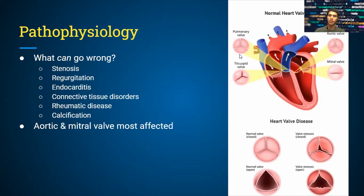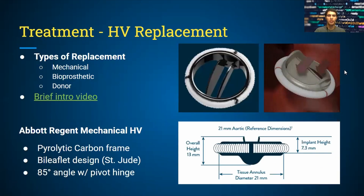The aortic and mitral valves are most affected because they are on the left side of the heart and pump blood to the systemic circuit, though it can affect pretty much any valve. Here are some diagrams showing what can happen when you have a stenotic valve or a prolapsed valve, which regurgitates. Current treatments include mechanical, bioprosthetic, and donor valves.